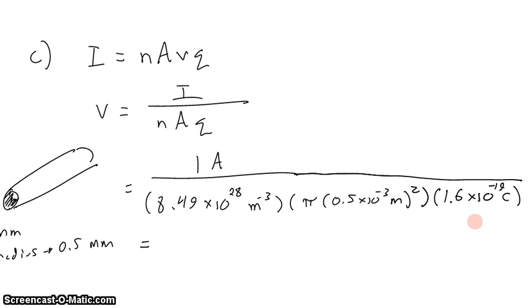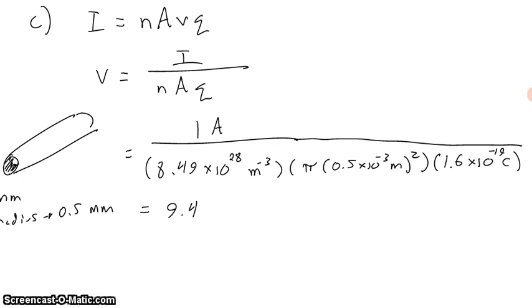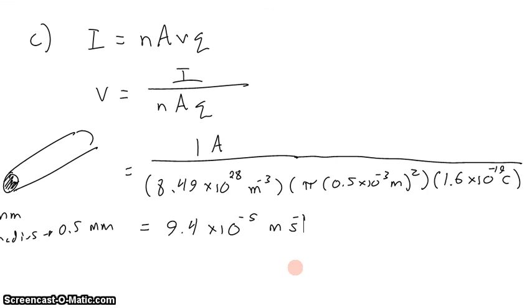We know everything in the equation. Even though it looks a little muddy, we can punch all of that into the calculator. When we do, we get 9.4 — to two significant figures. We only had two significant figures. Two significant figures: 9.4 times 10 to the negative 5 meters per second.